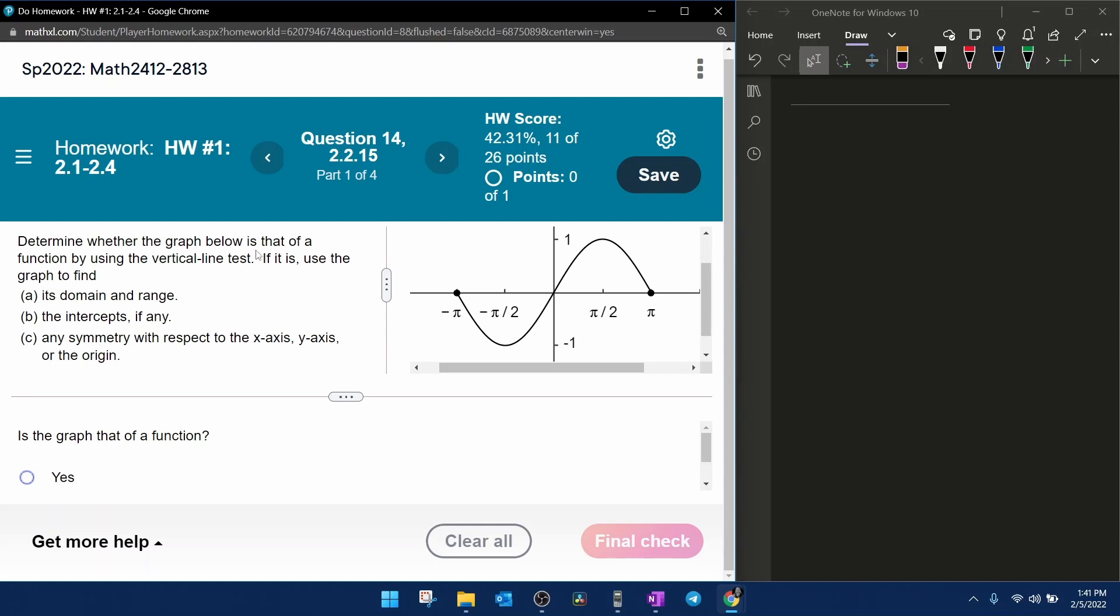It says determine whether the graph below, actually it's over here, is that of a function using the vertical line test. So looking at this particular function, we can see that every vertical line that I could possibly draw will intersect the curve only one time, and that means that it is a function.